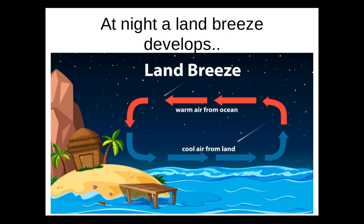This causes the low surface pressure to shift to over the ocean during the night and the high surface pressure to move over the land. This creates a temperature gradient between the ocean surface and the nearby land at night, and the wind will blow from the land to the ocean, creating a land breeze.